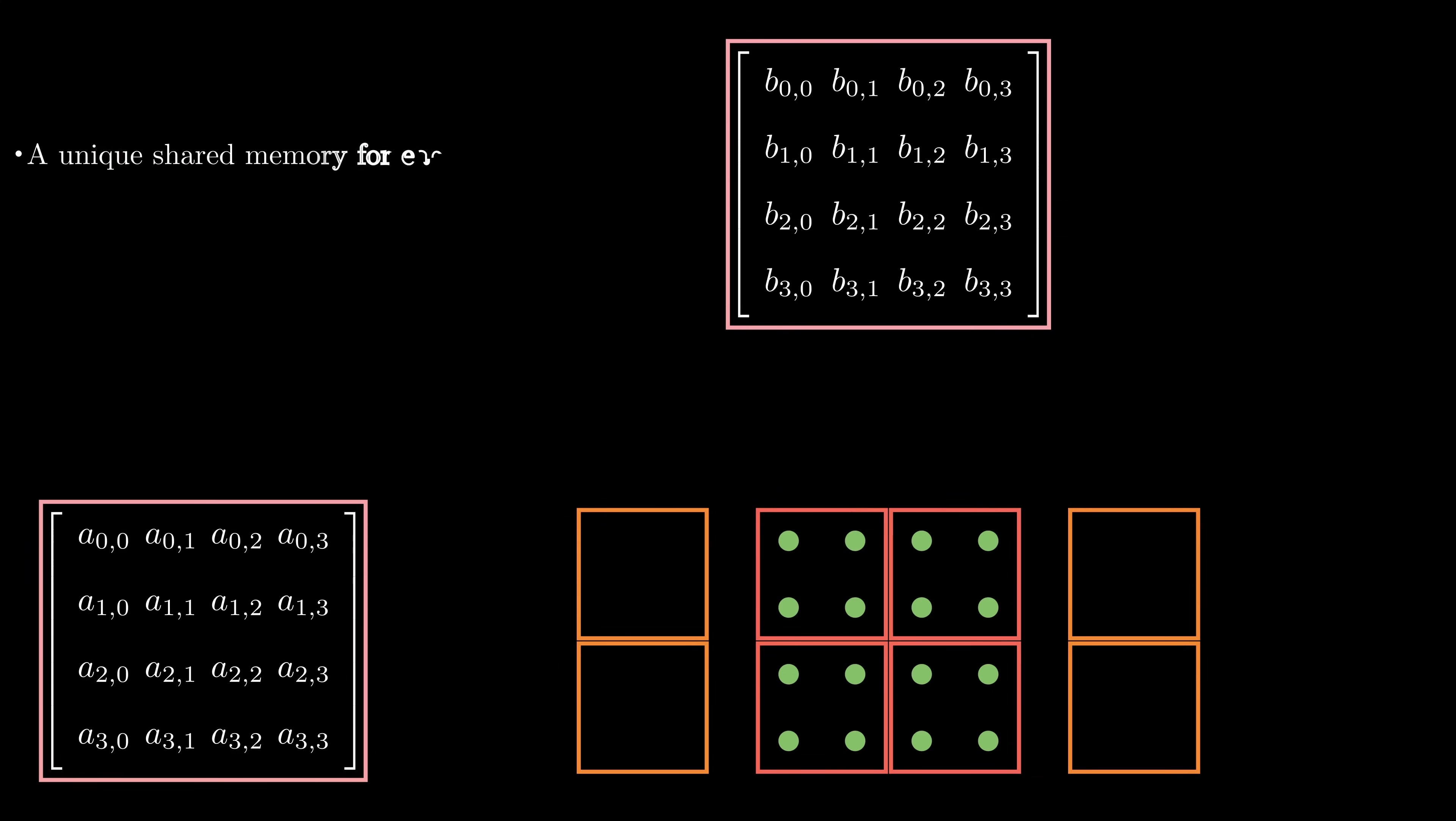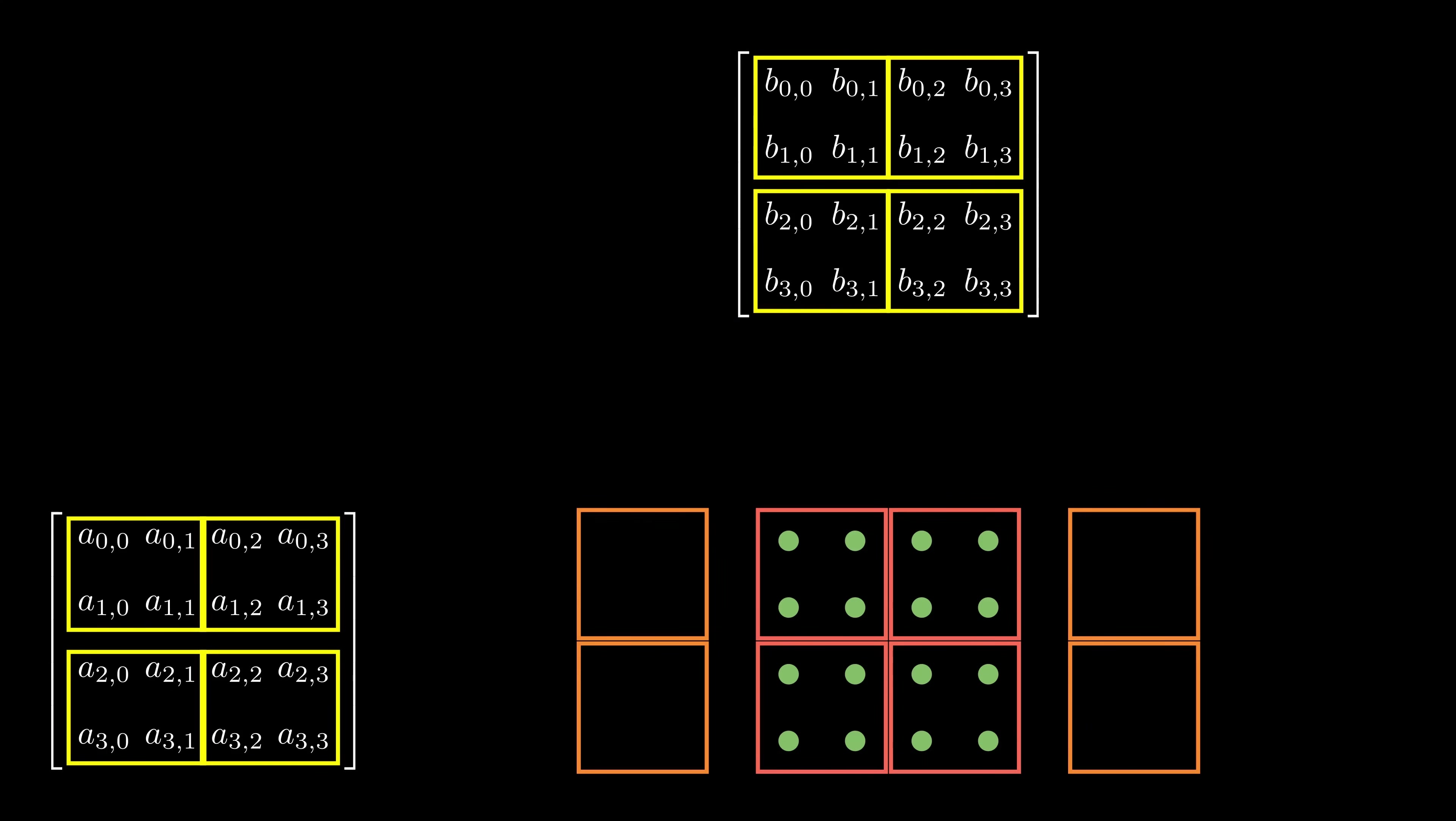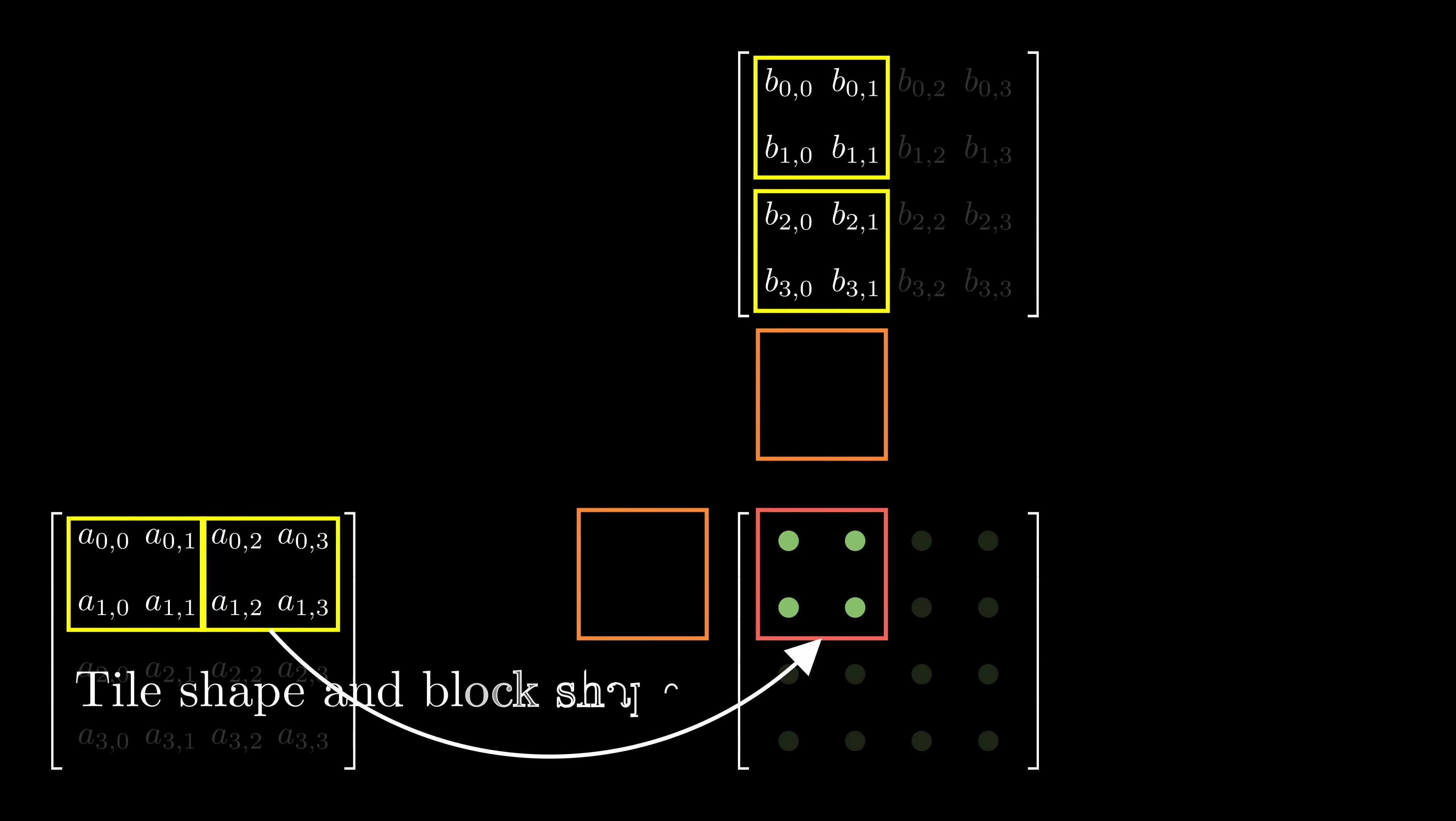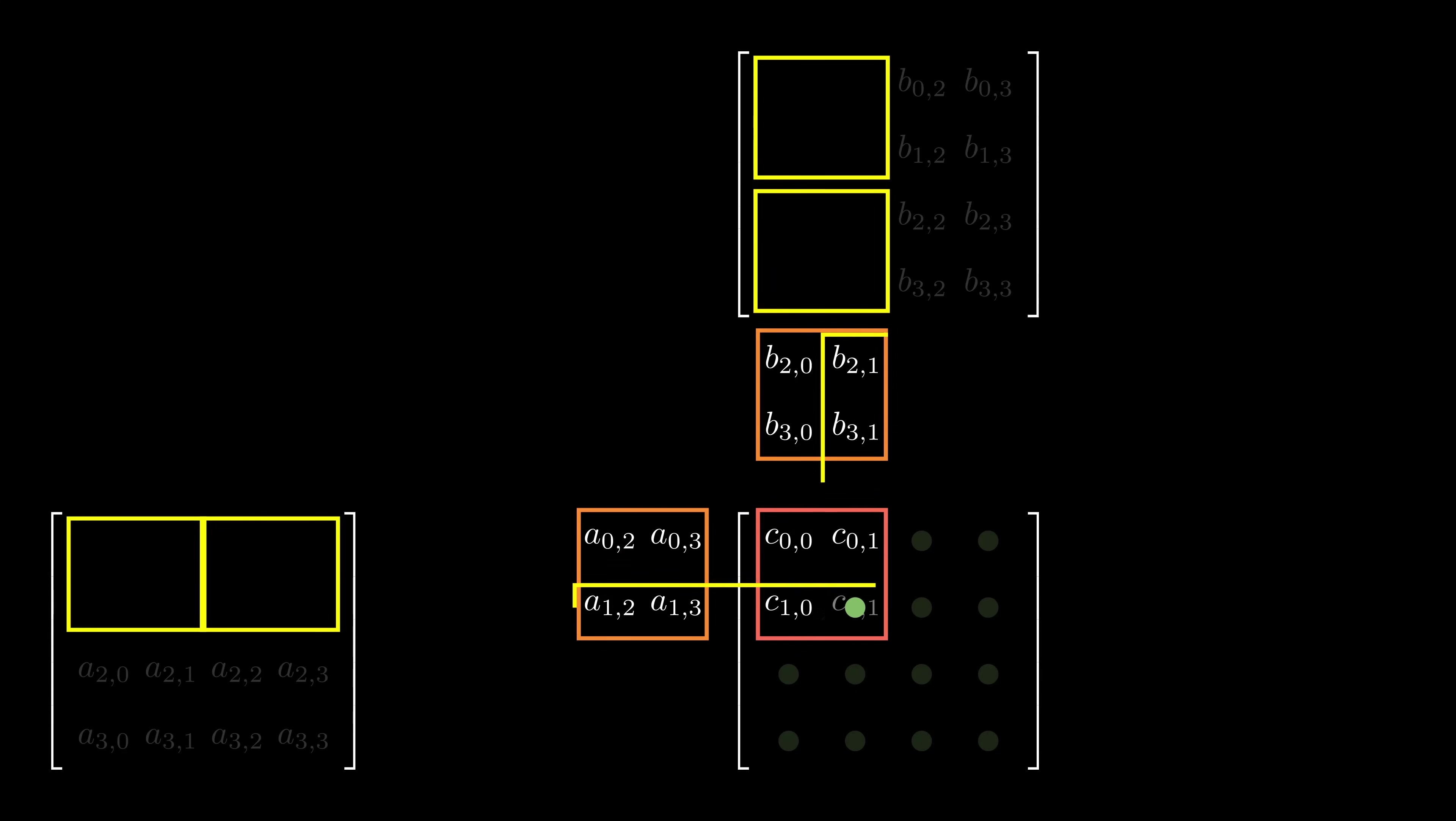On the software level, there are separate shared memory units for each thread block. As shared memory cannot hold large amounts of data, input matrices must be divided into smaller tiles. The strategy here is to keep the tile size consistent with the thread block size. This is done so that each thread can copy an element from global memory to the shared memory first, then perform the partial dot product.